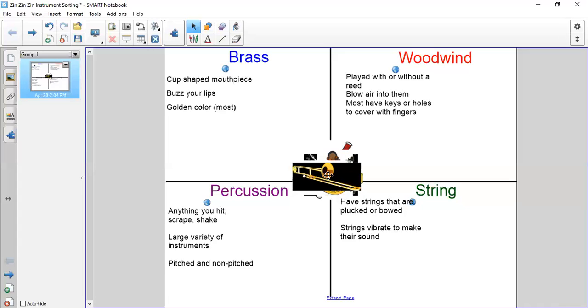This first instrument here in the middle is a trombone. The trombone is long, it has that long slide, it's golden color, it has a cup-shaped mouthpiece, and you have to buzz your lips. This would go in the brass family.